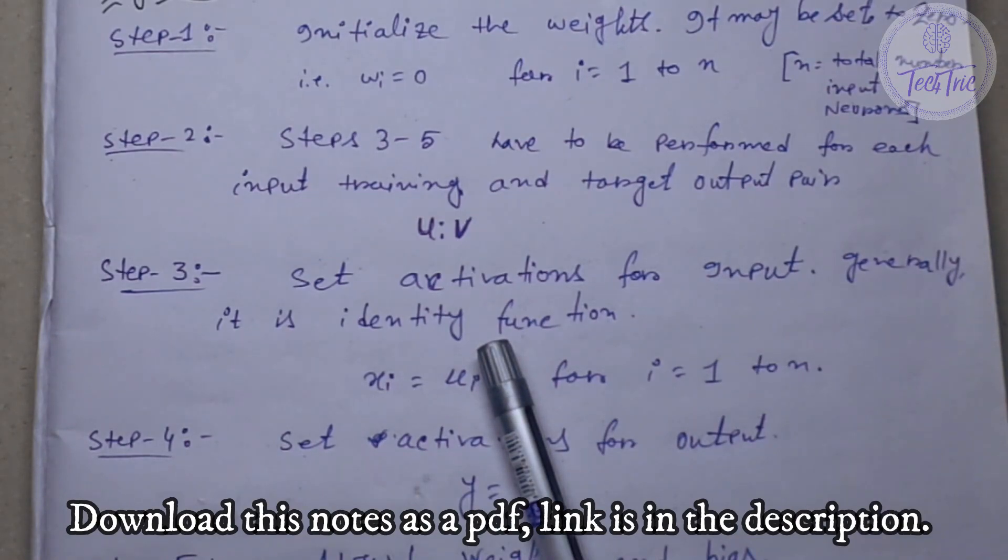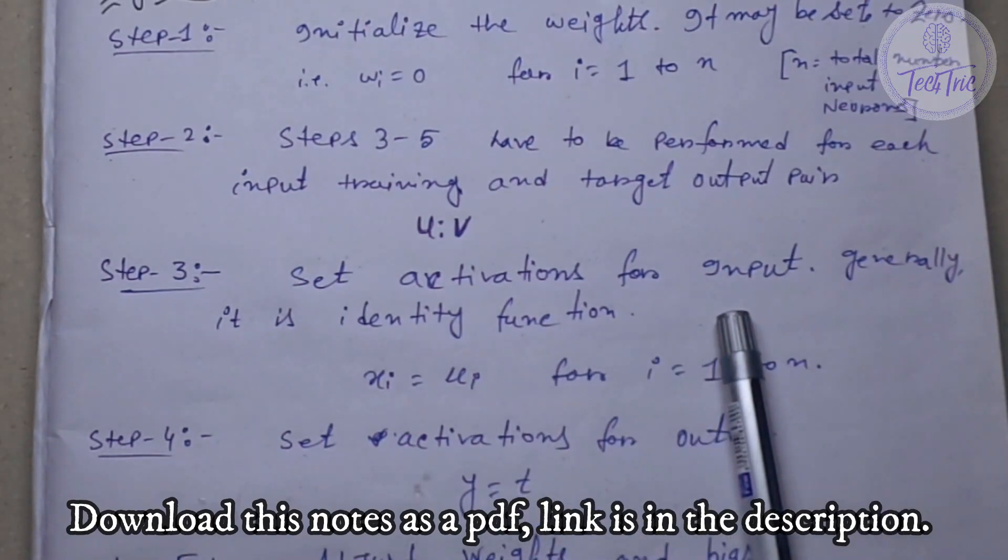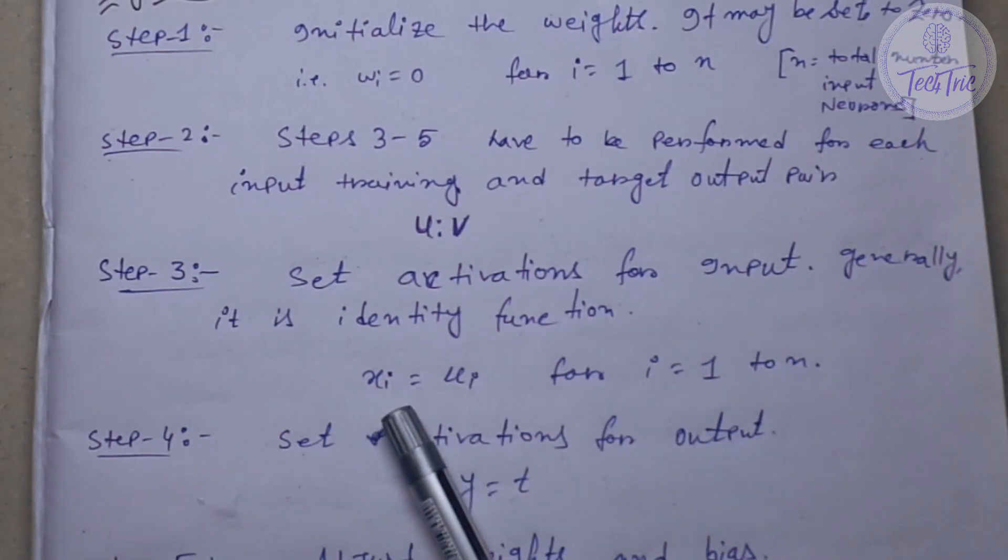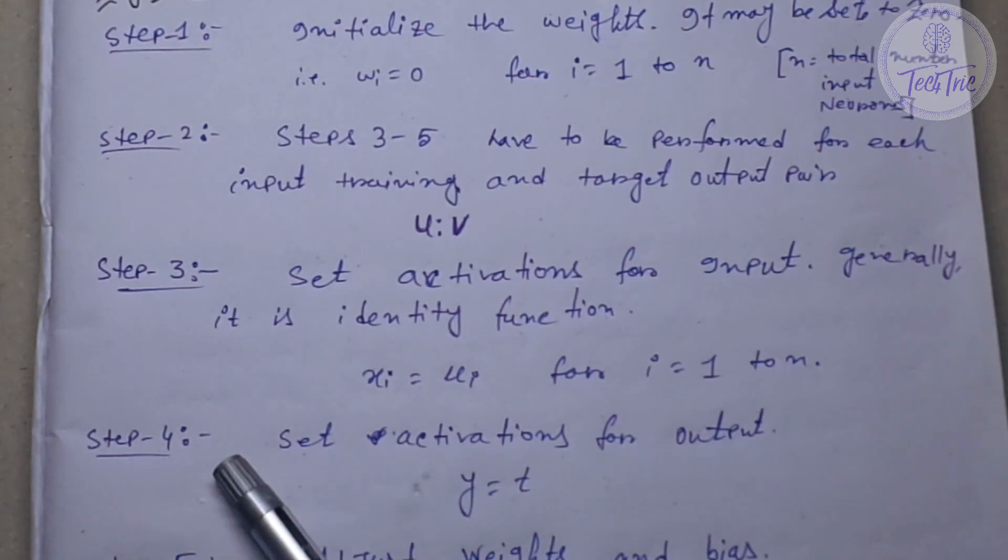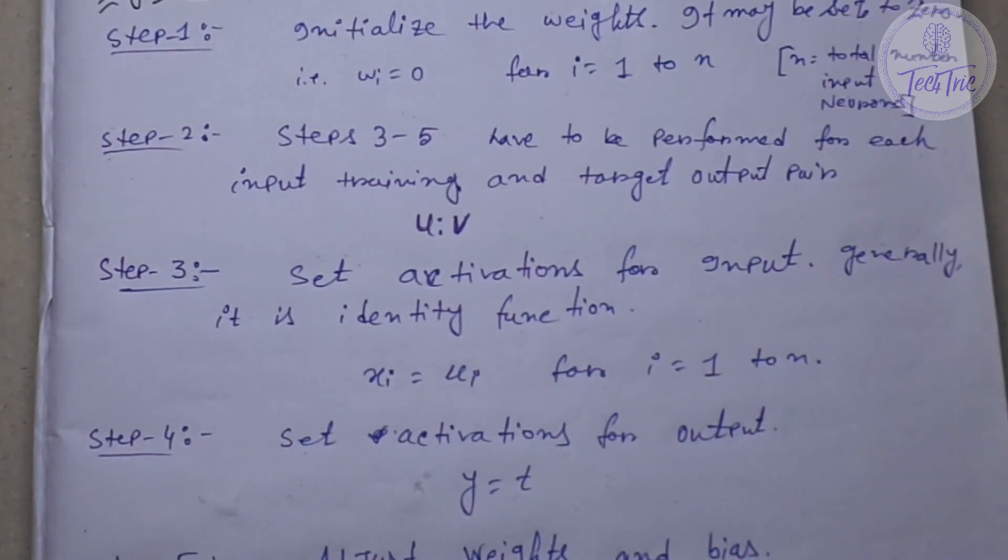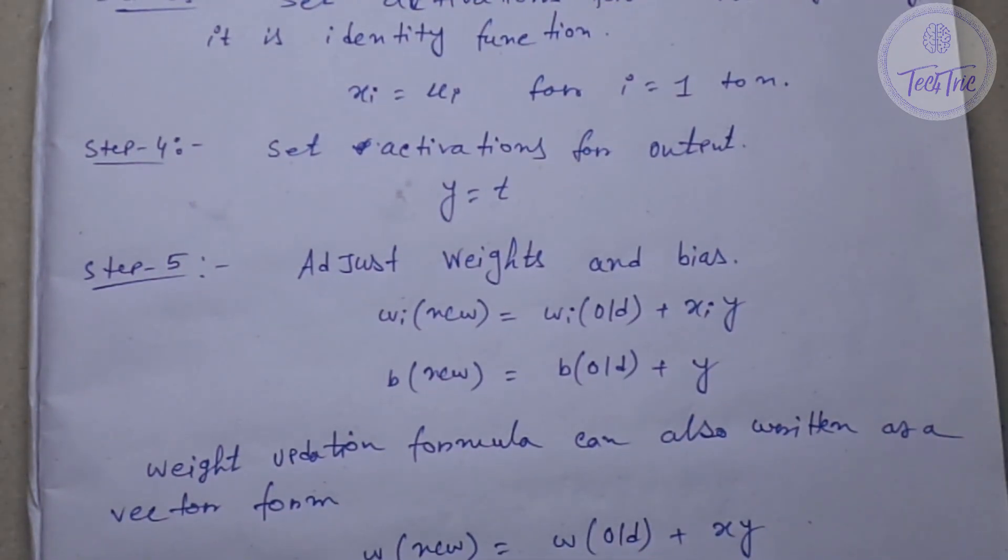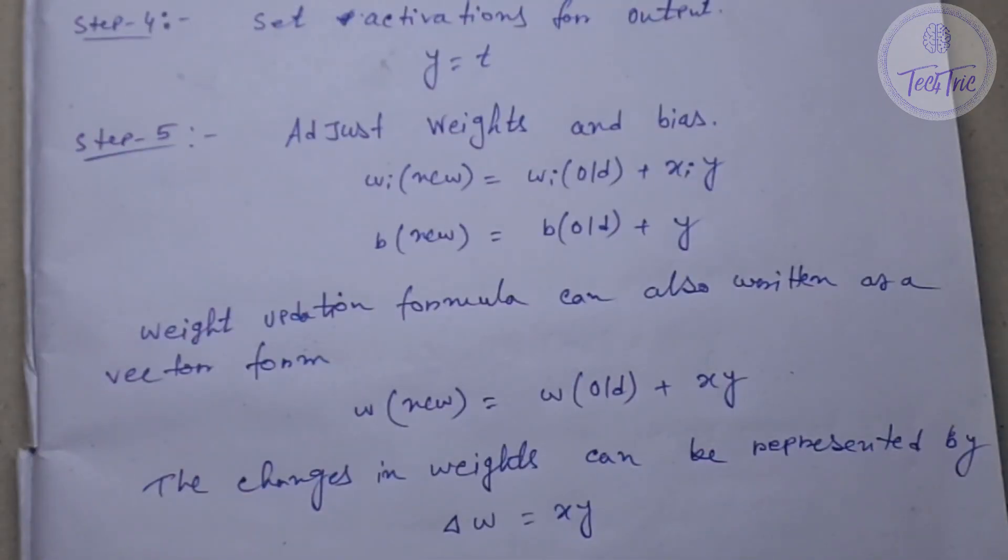For step 4 we have to set the activation function for output. And in step 5 we have to adjust the weights and bias.